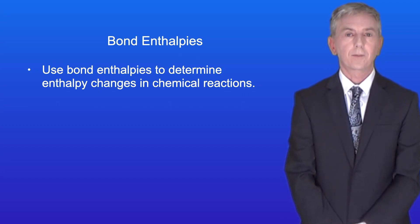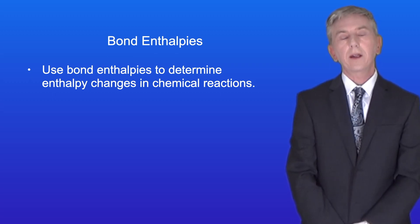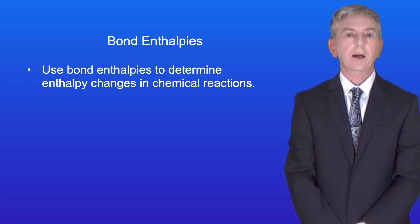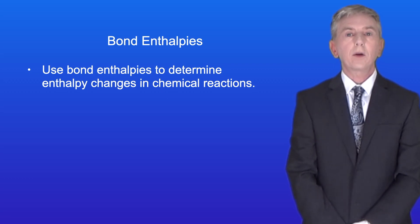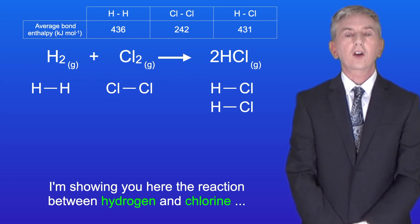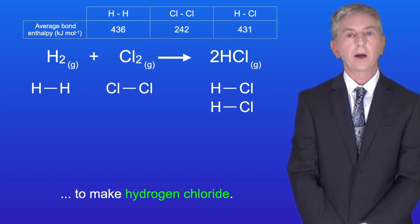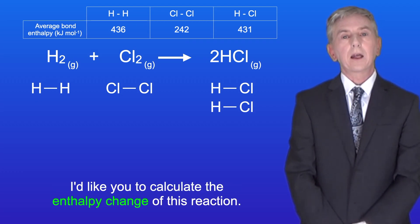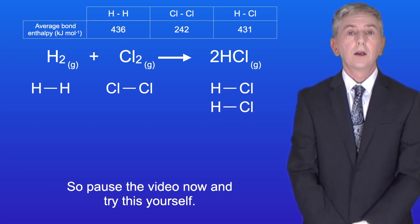Hi and welcome back to Free Science Lessons. In the last video we looked at how to use average bond enthalpies to calculate the energy change for a chemical reaction. In this video I'm going to give you two questions to try yourself. I'm showing you here the reaction between hydrogen and chlorine to make hydrogen chloride, and I'm giving you the average bond enthalpies of the chemicals. I'd like you to calculate the enthalpy change of this reaction, so pause the video now and try this yourself.